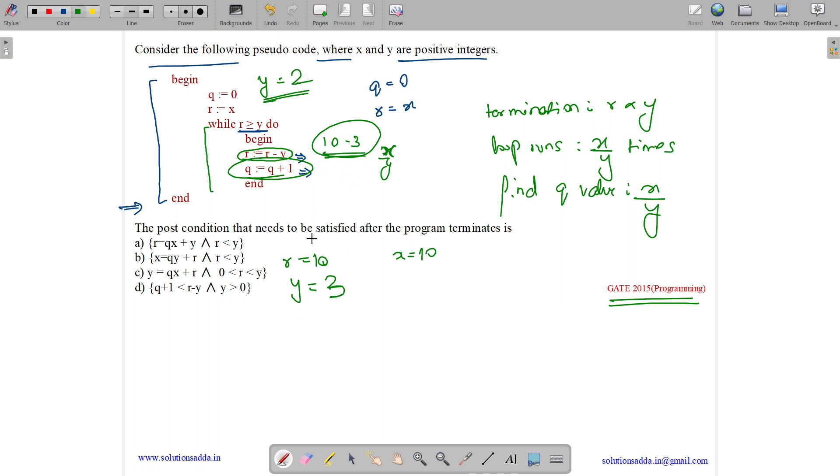Then we are decrementing it by 3 each time, so first r is 10, then it becomes 7, then it becomes 4, then when it becomes 1 we terminate the loop. What is this 1? How can we find out this 1? This 1 can be easily found out by 10 mod 3,